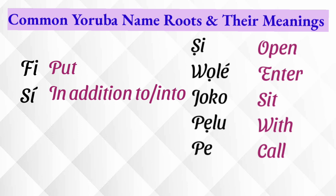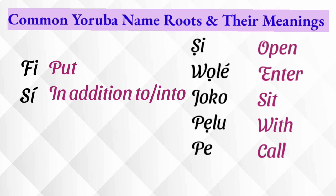Wale means 'enter' — Adewale means crown has entered, Olawale means wealth has entered, like into our lives. Joko means 'sit' — Jokotade means sit with the crown, Jokotola means sit with wealth. Wa means 'with' — Oluwakwelumi means the Lord is with me. We means 'called' — Wemisire means I've been called into good things.